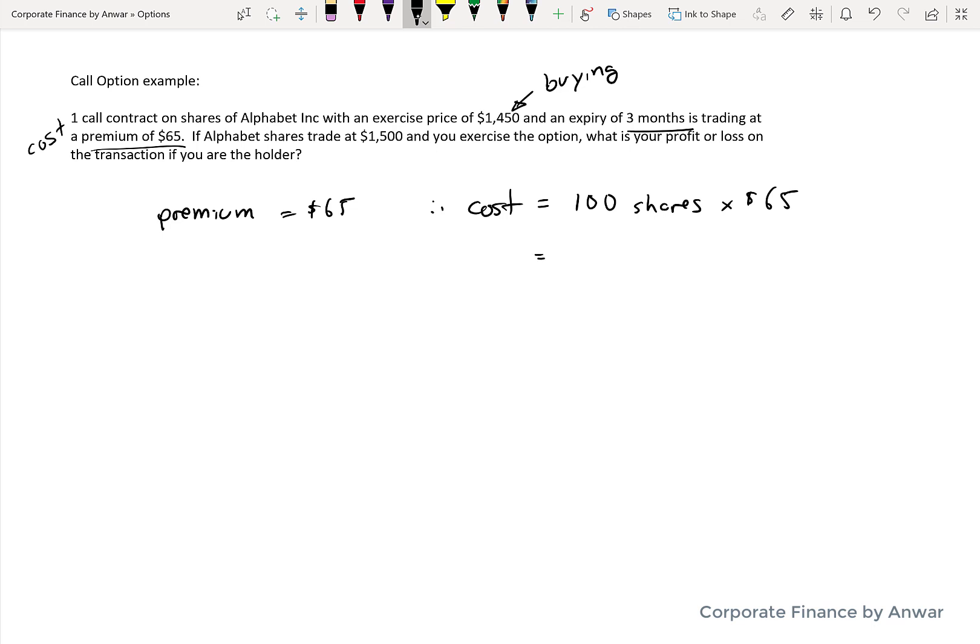So it's going to cost you $6,500 to buy this one option contract. Now it says you exercise the contract and the shares were trading at $1,500, so what would be your profit?